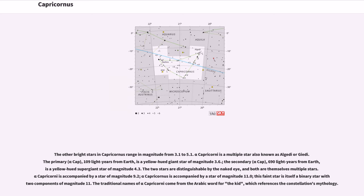Alpha 2 Capricorni is accompanied by a star of magnitude 9.2. Alpha 1 Capricornus is accompanied by a star of magnitude 11.0. This faint star is itself a binary star with two components of magnitude 11. The traditional names of Alpha Capricorni come from the Arabic word for the kid, which references the constellation's mythology.